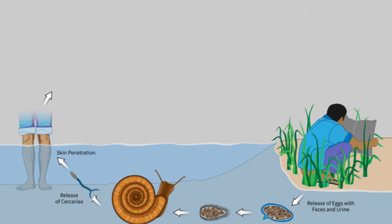Schistosoma parasites can penetrate the skin of persons who are wading, swimming, bathing, or washing in contaminated water.